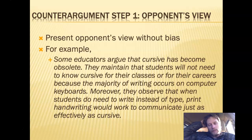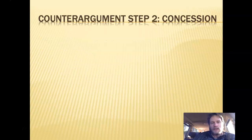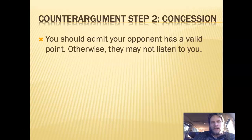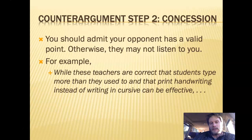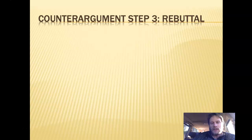That's a strong point, and here I'm trying to present it without my opinion — just putting out the opponent's view. The next part is the concession: you should admit your opponent has a valid point, otherwise they may not listen to you. You need to show you're listening and validate that they have a point. Here's the concession, fairly brief, in a dependent clause: 'Well, these teachers are correct that students type more than they used to, and that print handwriting can be effective.' This concession is a pivot or bridge to the rebuttal.